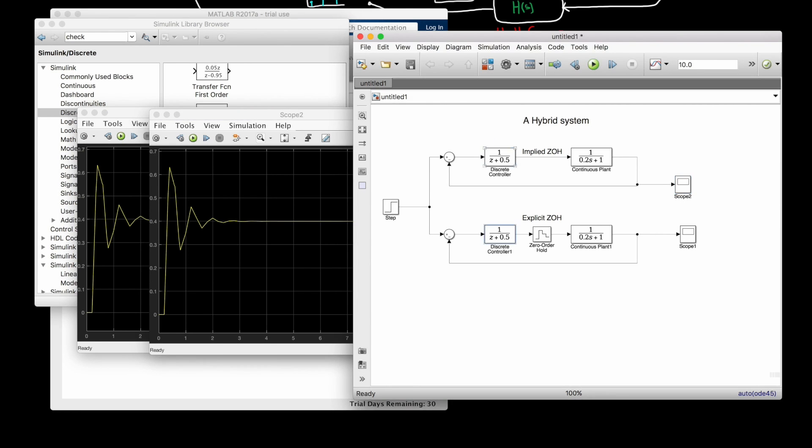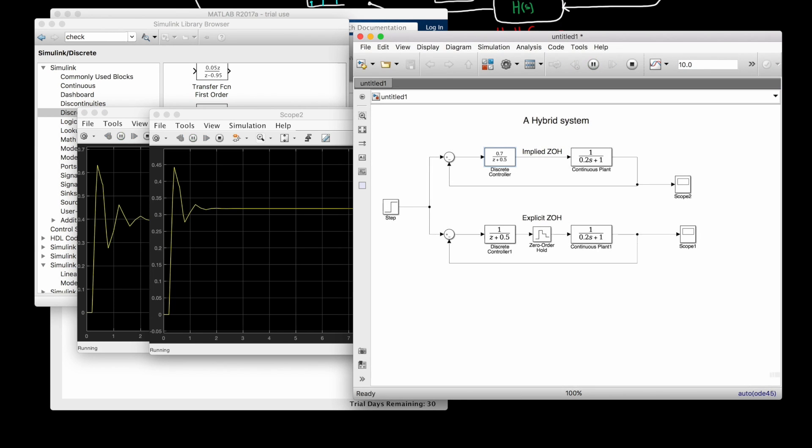Here I'll just change the gain of my controller from 1 to 0.7 to decrease the overshoot. With Simulink, we can make these types of changes and see how it affects our hybrid model. And I could keep tweaking this controller until I'm happy with it, but right now I'd like to show you something else that you should know when using Simulink to design your control system.